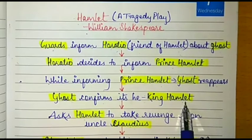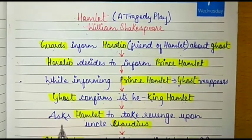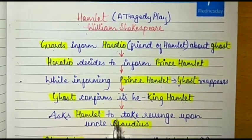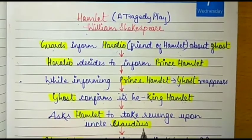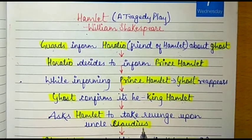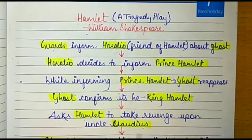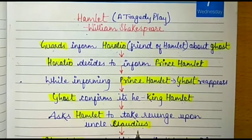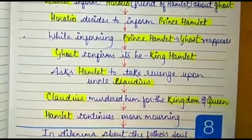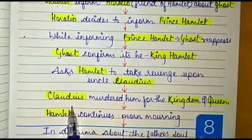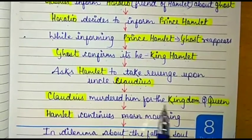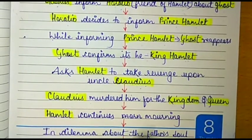While informing Prince Hamlet, the ghost reappears. The ghost confirms it is King Hamlet, who used to rule the kingdom of Denmark. He asks Prince Hamlet to take revenge upon uncle Claudius, because it was Claudius who had murdered him with a proper plan — for the kingdom and the Queen.